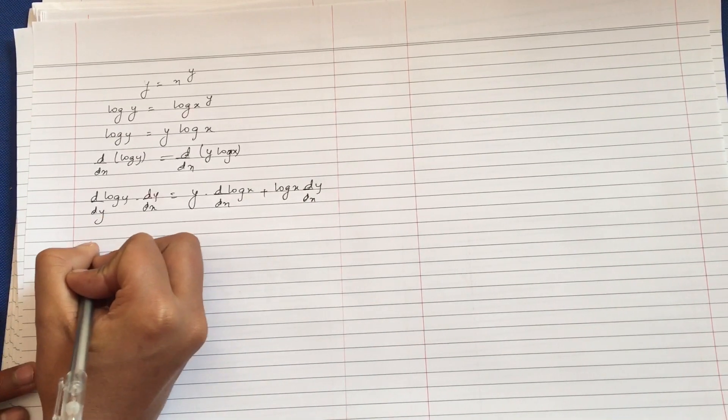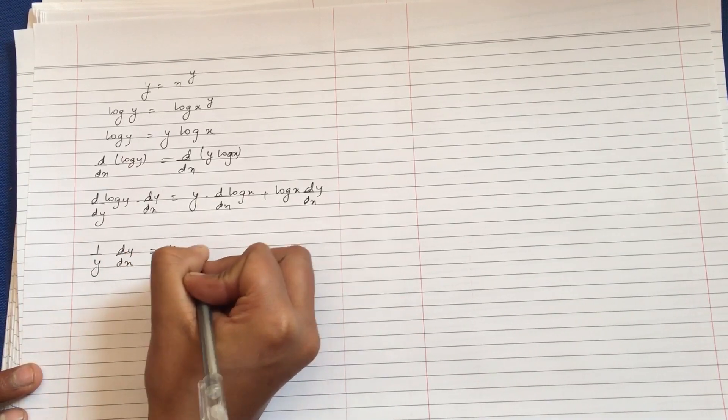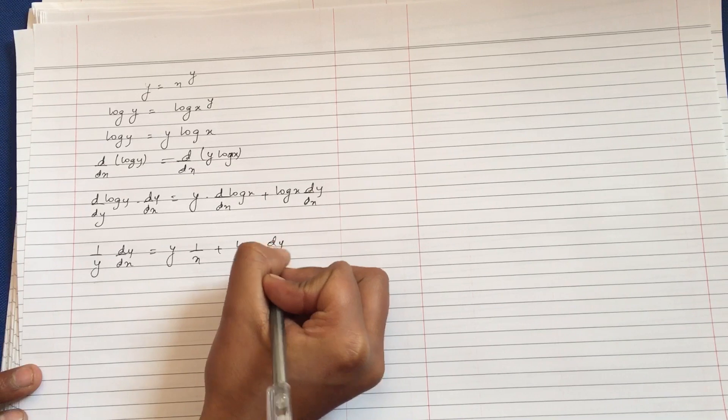After this, this is 1 by y times dy by dx, and this will be like y times 1 by x plus log x dy by dx.